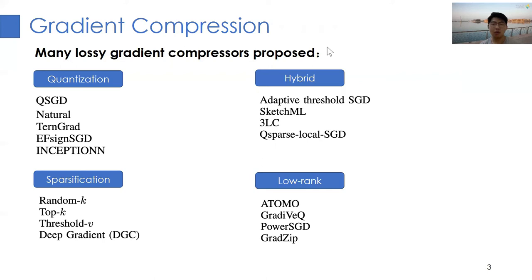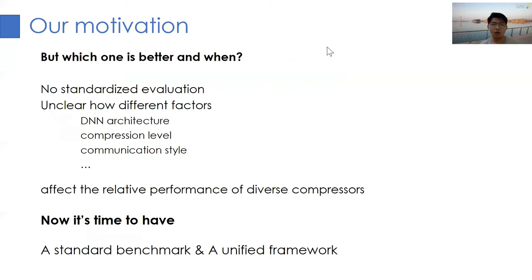Quantization reduces the bit width of each element in the gradient from 32-bit floating point to representations with lower bit width, while sparsification only takes a few elements of the whole gradient and keeps their original data type. For example, the TopK method only selects the top-K values by their magnitude. Hybrid methods combine quantization and sparsification. Low rank methods decompose the gradient into low rank matrices.